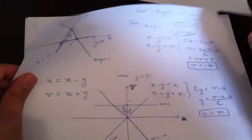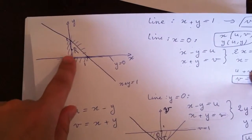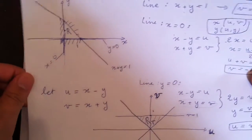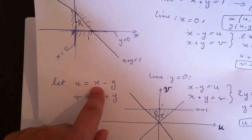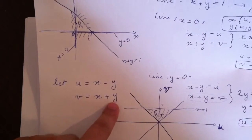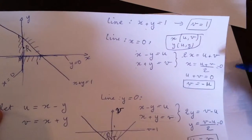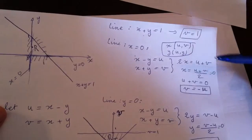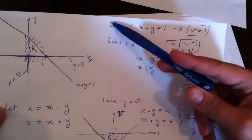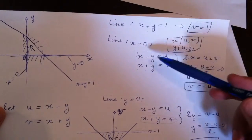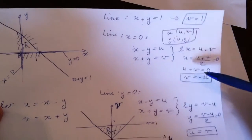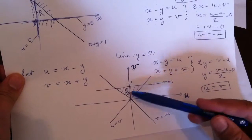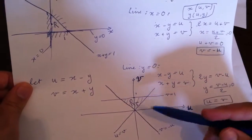So what we did in the first part: we drew the transformed region — we first drew the region bounded by these lines. Then we chose a transformation: u is equal to x minus y, and v is equal to x plus y. We found the corresponding bounded lines from each of the original lines, giving us the three boundary lines of the transformed region.